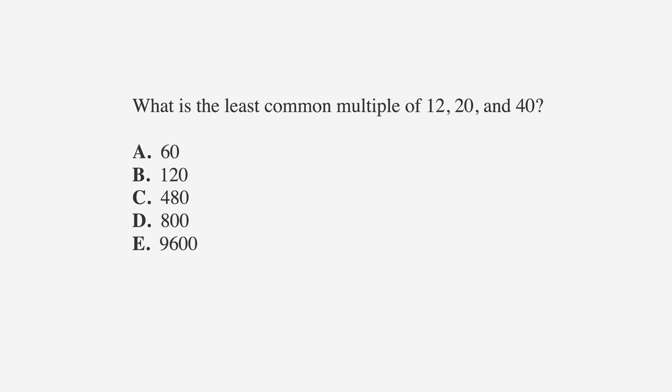What's the least common multiple of 12, 20, and 40? Since we're looking for the least common multiple, we want to find the smallest number that 12, 20, and 40 all go into. The easiest way to solve this is to back solve, starting with choice A, 60, which is the smallest number and, potentially, the least common multiple.